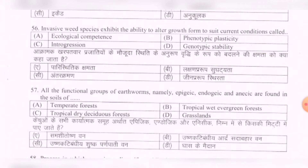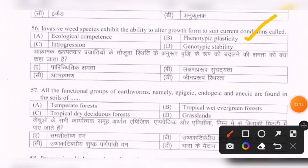Next question: Invasive weed species exhibit the ability to alter growth form to suit current conditions; this is called — options are: ecological competence, phenotypic plasticity, introgression, genotypic stability. The correct option is B — phenotypic plasticity.